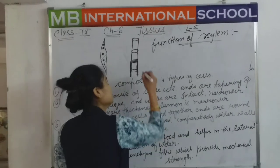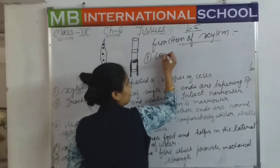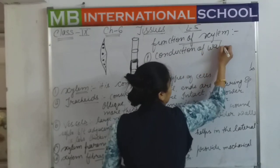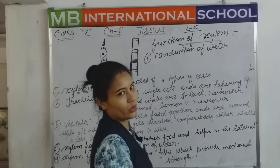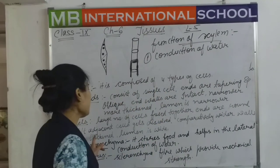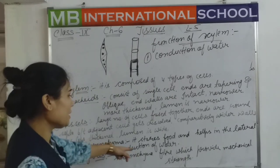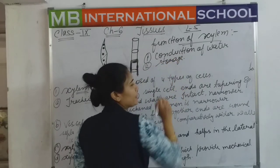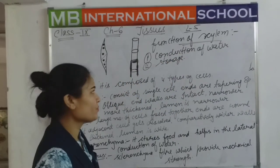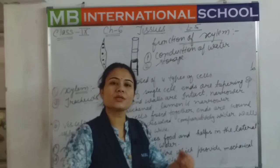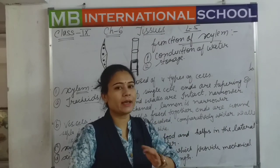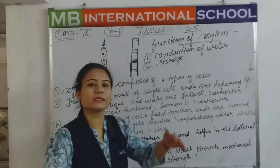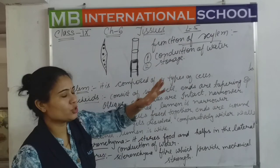The first very important function is conduction of water. The second function is storage — xylem parenchyma performs storage work. Lateral conduction, oblique conduction, straight conduction — in all cases, xylem helps in the conduction of water.